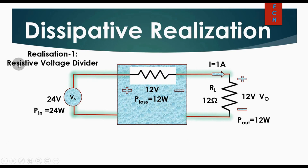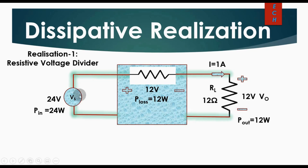This is the resistive voltage divider realization — the first method. You have your supply voltage equal to 24 volt and your load voltage and load current equal to 12 volt and 1 ampere. So the output power is 12 volt × 1 ampere = 12 watt. Since this is the resistive voltage divider method, the same current flows from the source to the load, so the input power is 24 volt × 1 ampere = 24 watt.